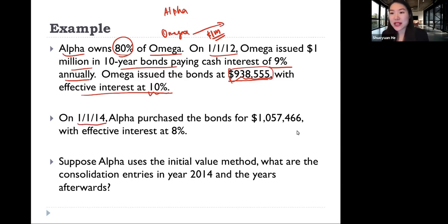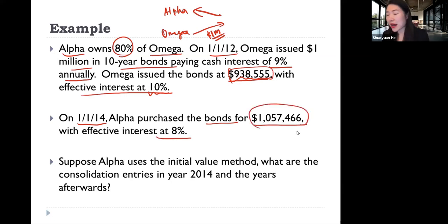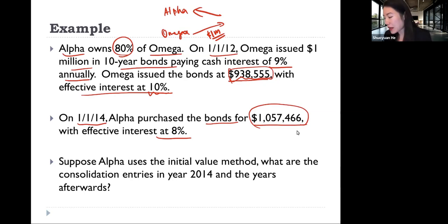Two years later, on January 1st, 2014, Alpha purchased the bond for $1,057,466 with an effective interest rate of 8%. This number is calculated based on the face value of the bond, the cash interest the bond is paying, and the effective interest rate at the time Alpha purchased the bond.